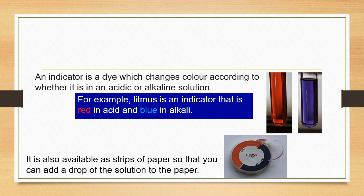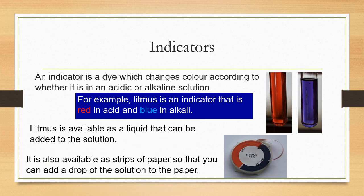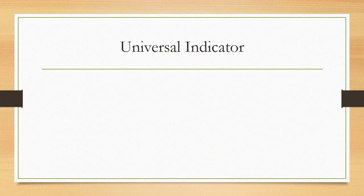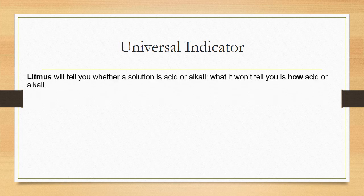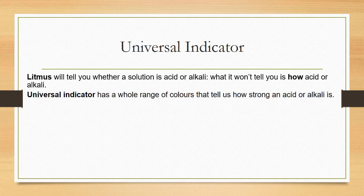In the laboratory, we'll tend to use litmus paper, which is more effective and cheaper. Litmus is available as both a liquid, which can be added into solution, and as paper. Litmus will tell you whether a solution is acidic or alkaline, but it won't tell you how acidic or alkaline — that's where universal indicator comes in.